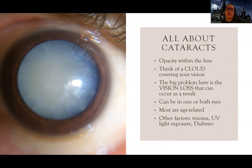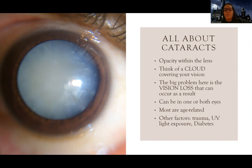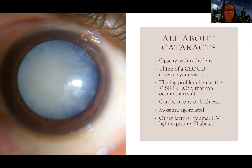Effectively, what cataracts are is an opacity — a cloudiness — of the lens. What happens is your lens, which normally should be clear so you can see right through it, becomes cloudy. When things get cloudy, you're going to be unable to see well. The biggest issue of course is vision loss. As time goes on, proteins and other things start to clump on your lens, leading to a very cloudy, covered lens, which causes a lot of vision issues.